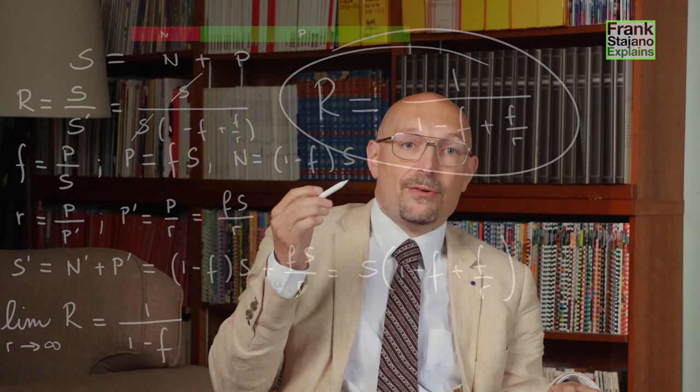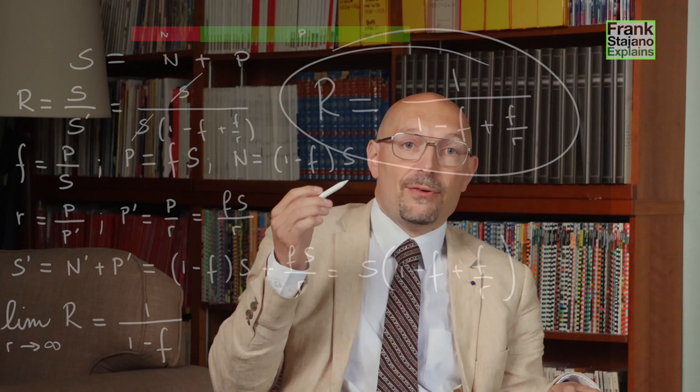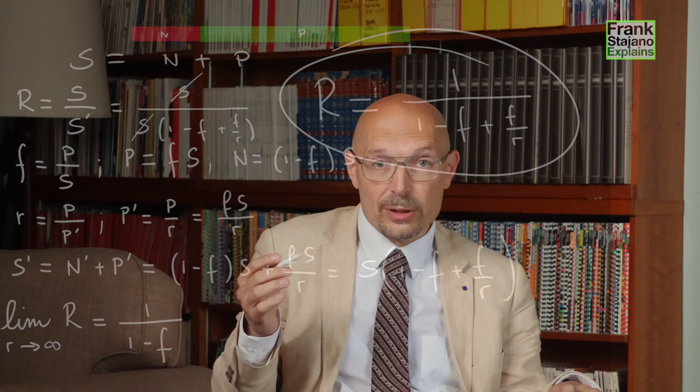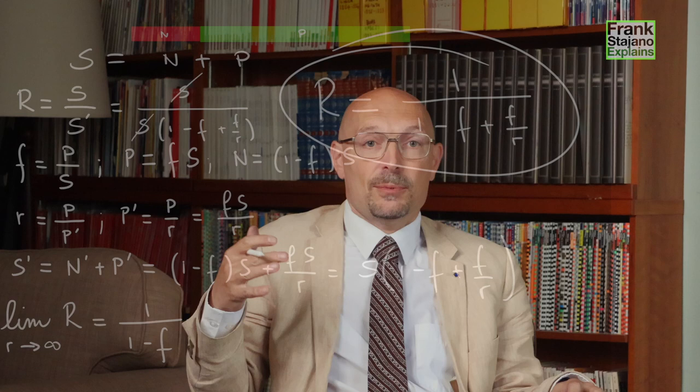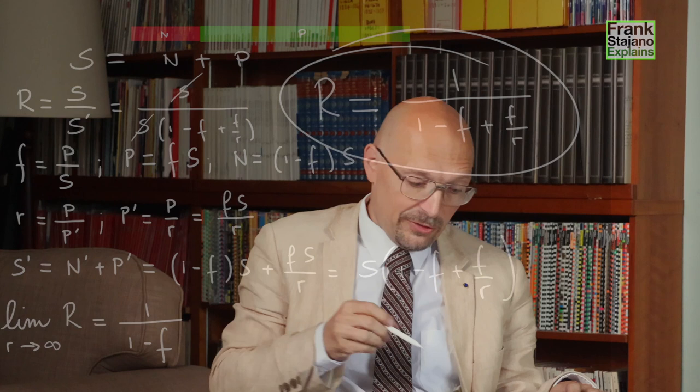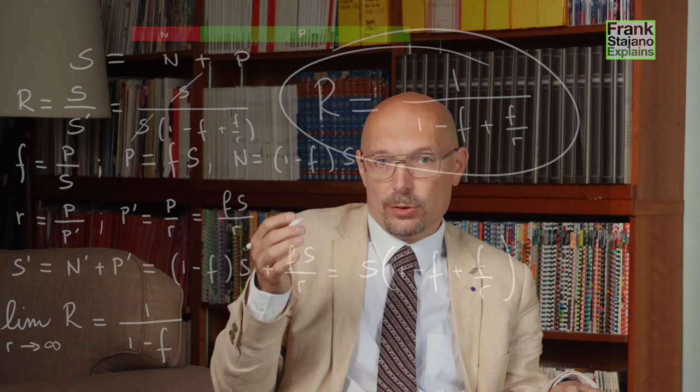Whereas if f were 95% instead of 5%, so if the green part were 95% of the whole, then wonderful, the remaining non-improvable part, the red part, would be only 5%, which is 20 times smaller than 100%. And so I could have a speedup of up to 20 times if I managed to make the green part very small. But notice that even so, there's still going to be an asymptote, and I would never be able to speed up the whole system by any more than those 20 times. So that's Amdahl's law.